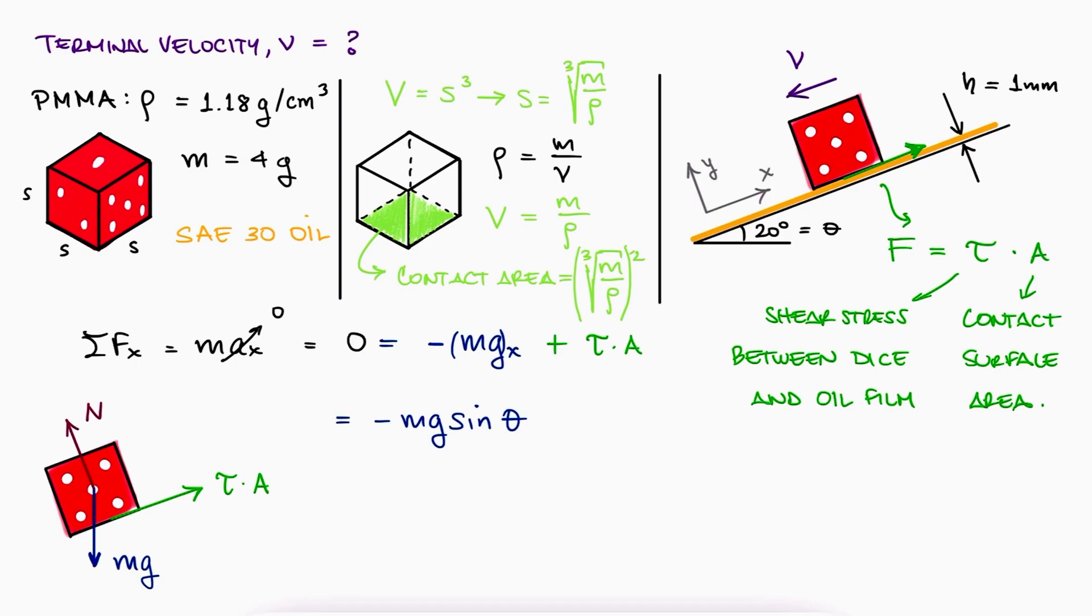Finally, from the main lecture video, we know that the shear stress is equal to the viscosity of the fluid times the velocity over the film's thickness. We look up the viscosity of SAE 30 at room temperature. And with that, we have everything we need to solve for the velocity of the dice.